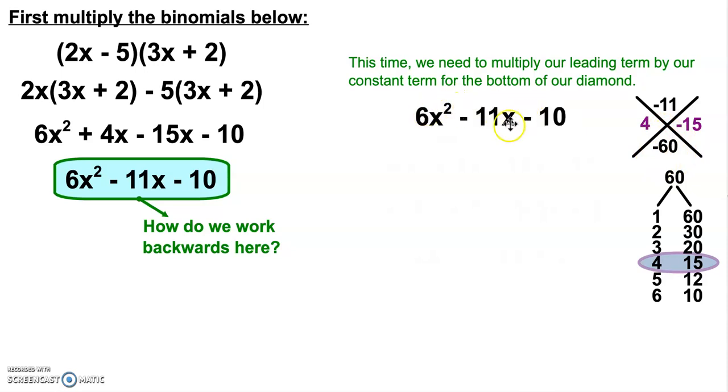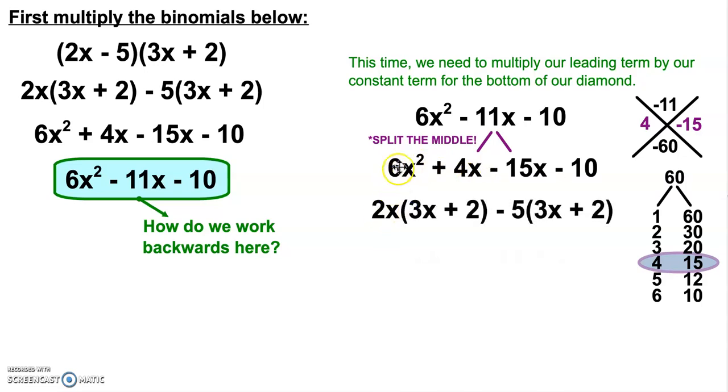So really nothing has changed except for getting the bottom part of our diamond a little differently. I'm still going to start with our trinomial, and I'm going to split the middle. I'm splitting the middle into 4x and negative 15x. From here, I factor by grouping. So 6x squared plus 4x has a common factor of 2x, and I'm left with 3x plus 2. Negative 15x minus 10 has a common factor of negative 5, which leaves me with 3x plus 2.